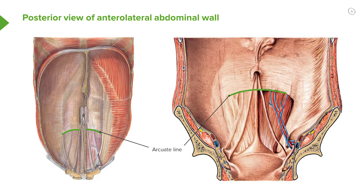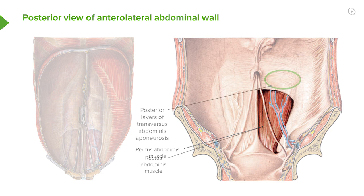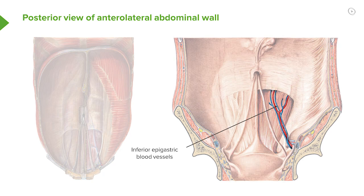We can see this close up. The arcuate line is here. This is rectus abdominis muscle and these are the posterior layers of the transversus abdominis aponeurosis. As rectus abdominis is pierced through them, we can now see the muscle fibres. Importantly, we can see some blood vessels — we've got our inferior and superior epigastric blood vessels that are supplying this region.